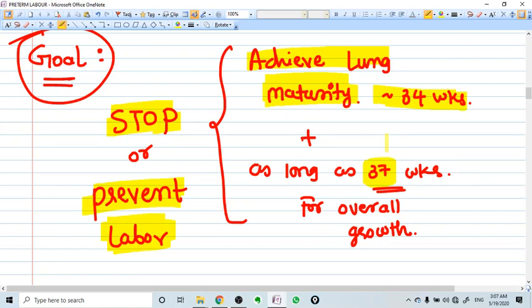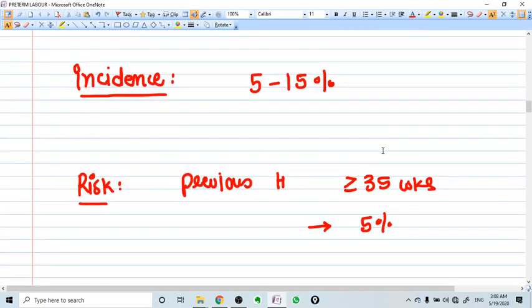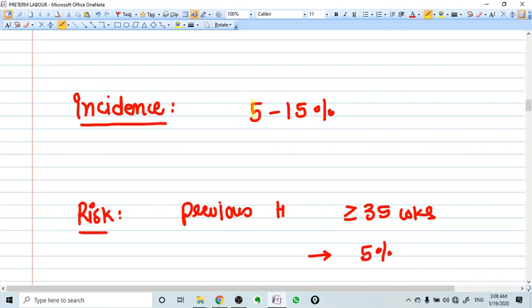Up to 34 weeks, we try everything to stop the preterm labor along with giving steroids to achieve lung maturity. After 34 weeks, the lung maturity has been achieved almost completely, so we're not very aggressive trying to stop the labor, but be very vigorous about the fetus and mother status. The incidence is 5 to 15 percent.